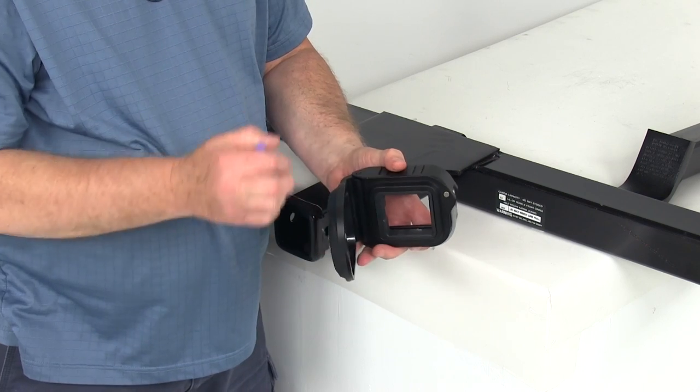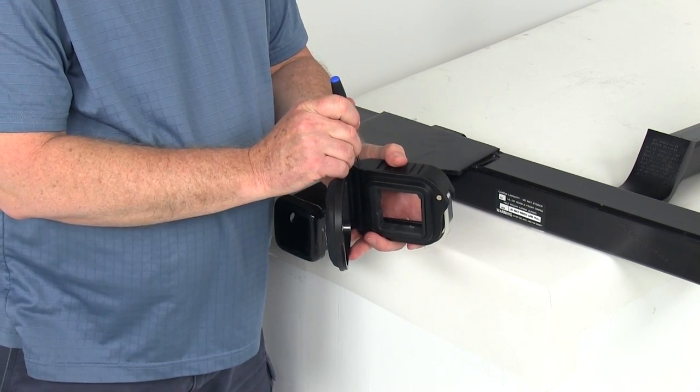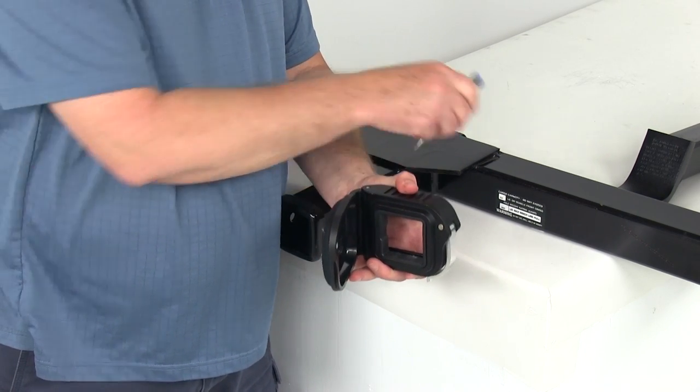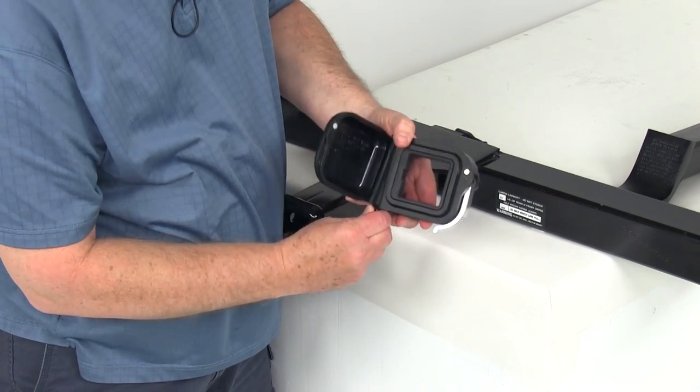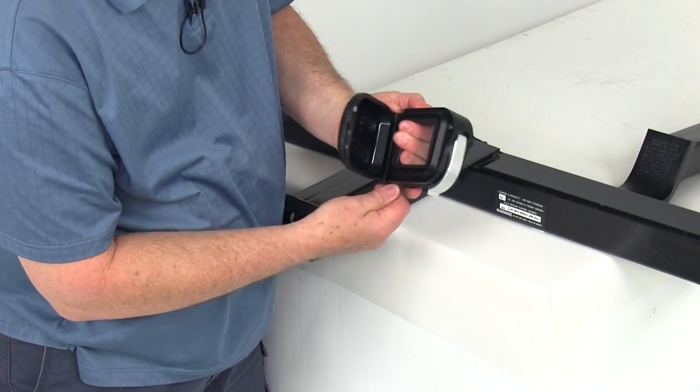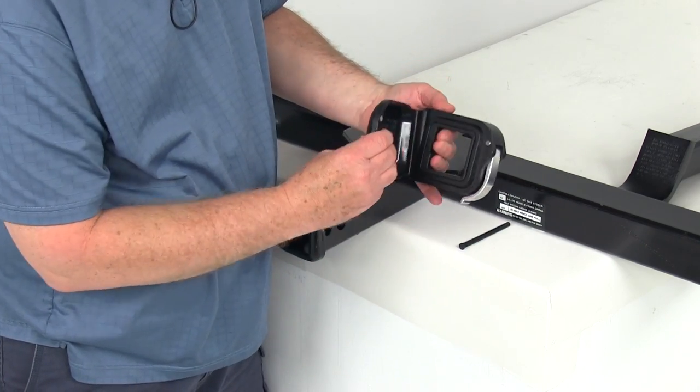There's a pin that holds this door on. So if you just start at the top and push with a small screwdriver down on the pin, the pin will pop out. And then all you have to do is just go ahead and slide the pin out and remove the door.